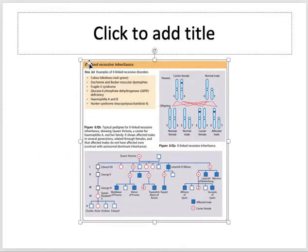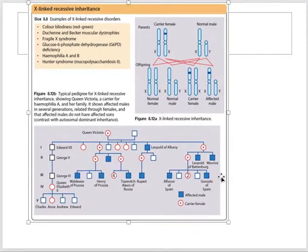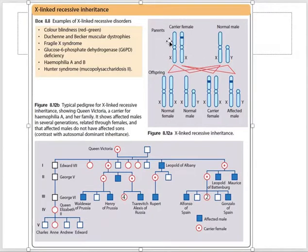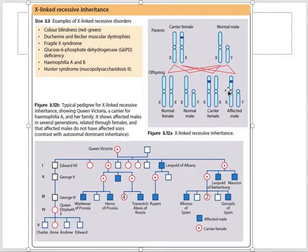In X-linked recessive inheritance, only the mother can be a carrier. If a male receives the abnormal gene on his X chromosome, the other chromosome is Y, so he will be affected. Females will be carriers, and whenever the abnormal gene is passed to a male offspring, he will be affected. Examples include color blindness, Duchenne and Becker muscular dystrophies, fragile X syndrome, and G6PD deficiency.